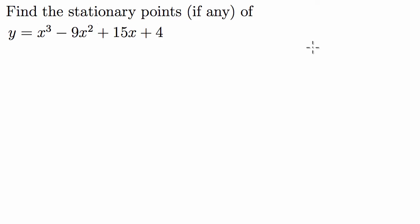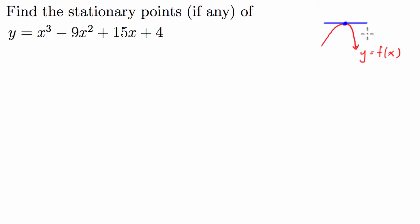A stationary point is when we have a function — let's say it looks like this — so this is our y equals f of x. Our stationary point is this point here. The reason we call it a stationary point is because at this point the derivative of the function is equal to zero. That's because it doesn't have any gradient at this point; there is no rate of change at the stationary point, hence stationary.